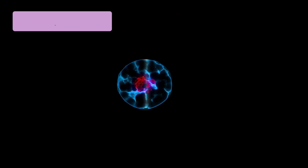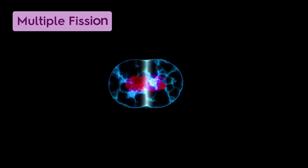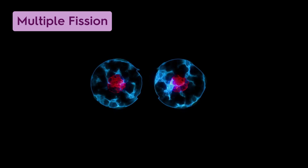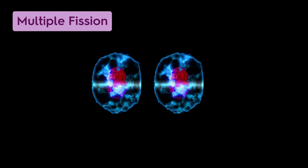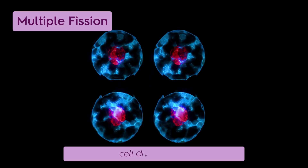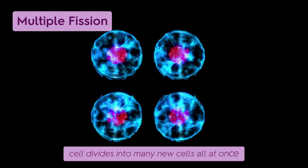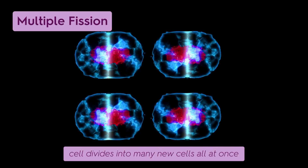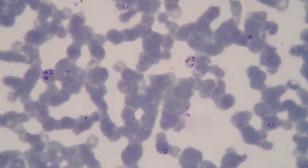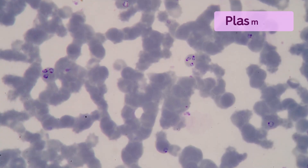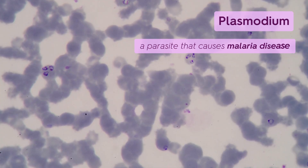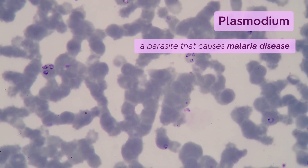Then there's multiple fission. This one's a bit more intense. Instead of just two, the cell divides into many new cells all at once. An example is plasmodium, a parasite that causes malaria disease.